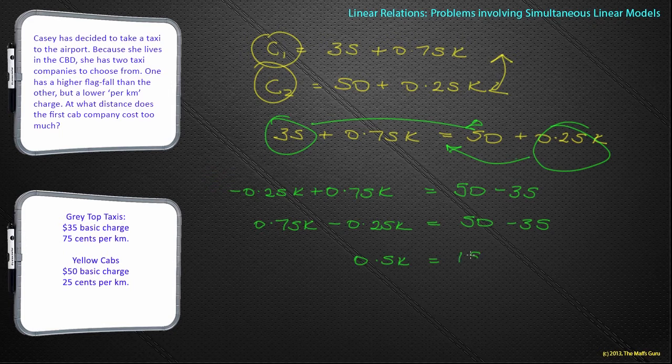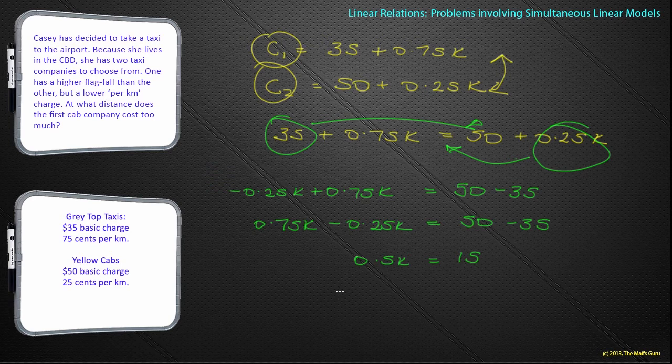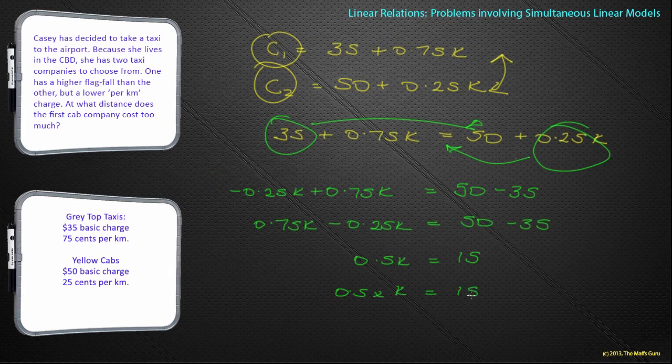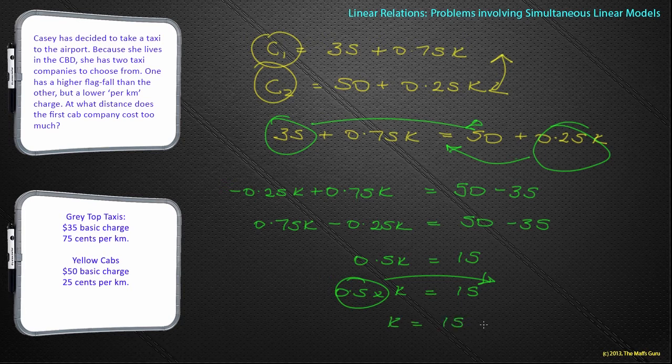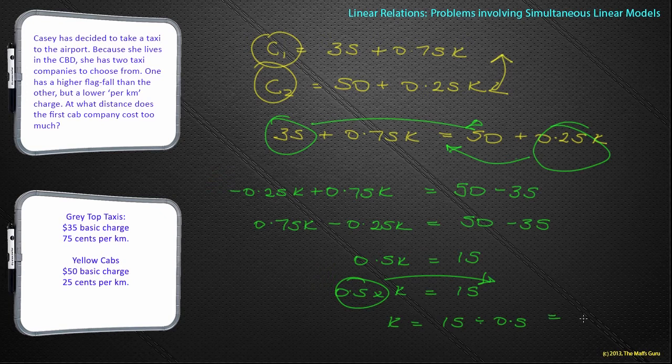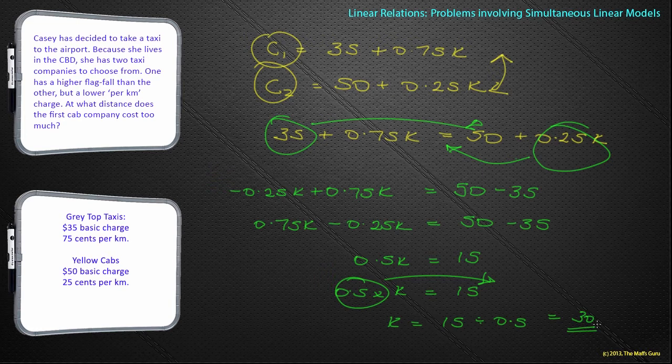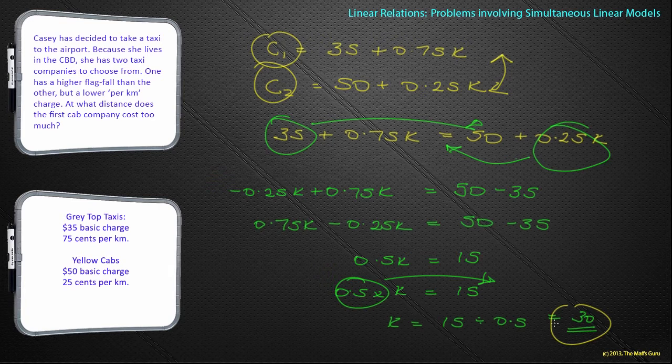And 50 take away 35 is 15. Well, between a number and a letter is a multiply, and so I can now move 0.5 and the times to the other side, so k becomes 15 divided by 0.5, which is actually 30. Wow! What does that actually mean? What that actually tells us now is that k, being 30, is the distance where they both have the same cost.